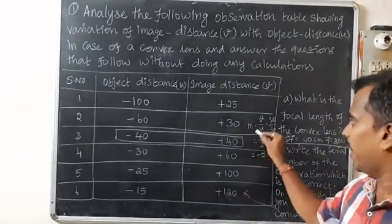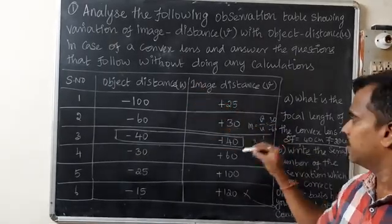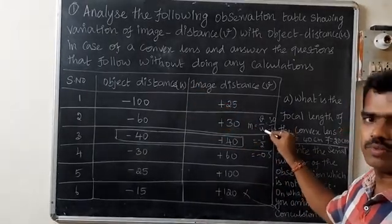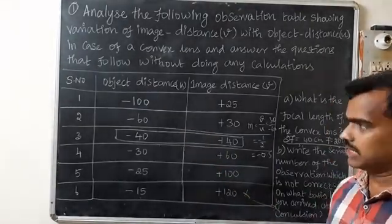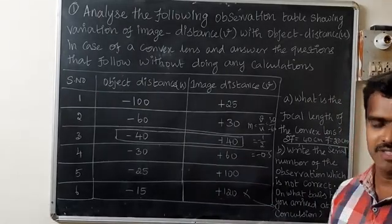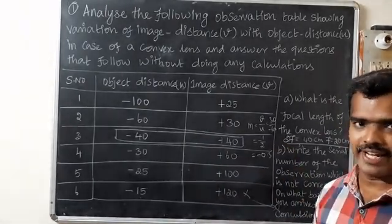I hope while I did this sum, in the sense without calculation I went, but here we need to calculate v by u. Then only we can find out the magnification rating value of this second serial number. Similarly, they may ask for any serial number magnification. For that magnification, we should also draw the ray diagram.